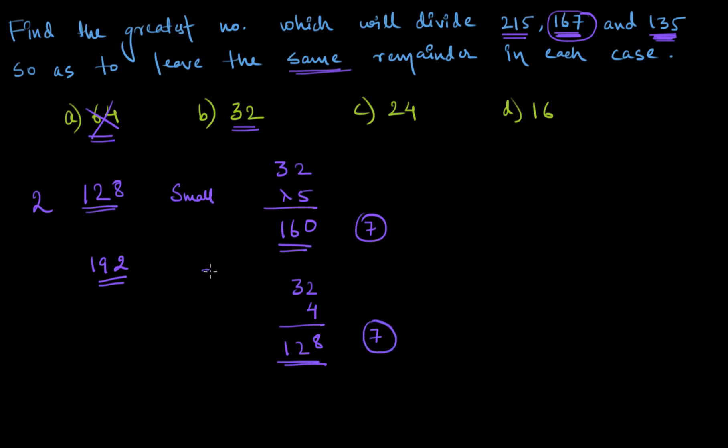Let us multiply 32 with, let's say, 7. 7×2=14, 1 carry, 7×3=21, 22, 224. So this can't go with 215. So I have to multiply this by 6.